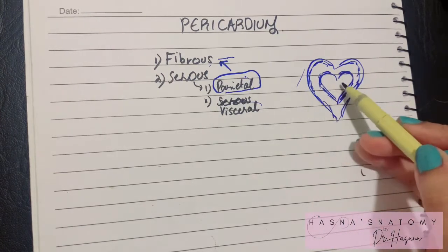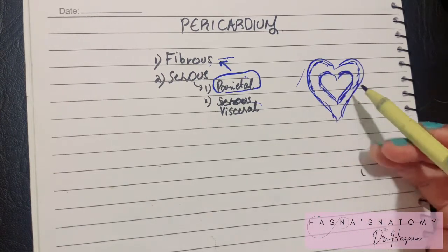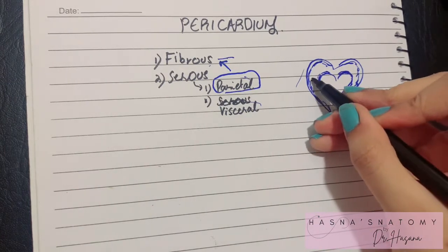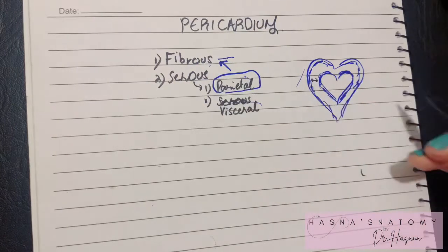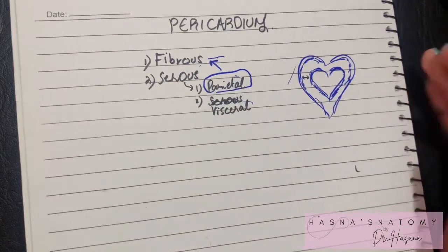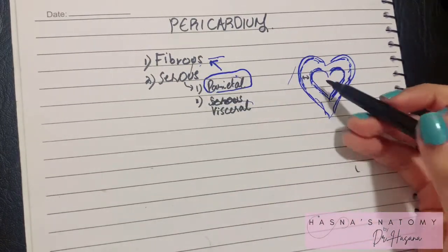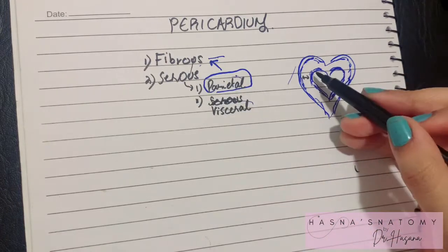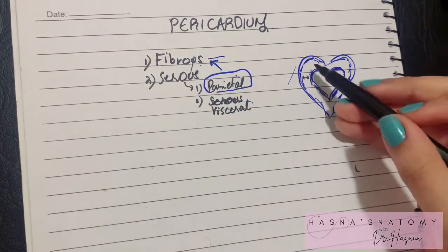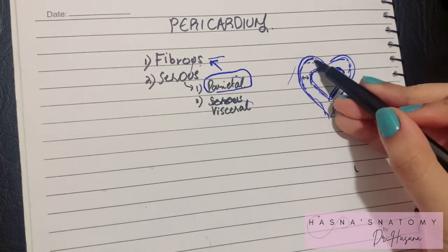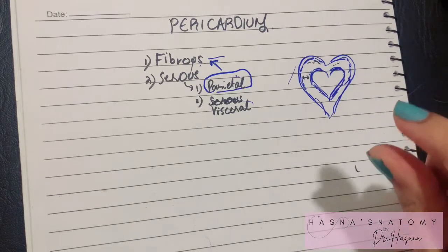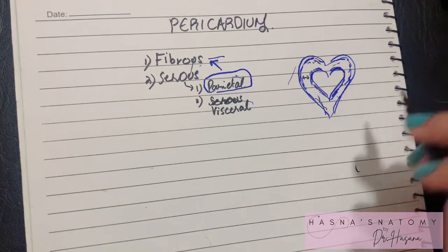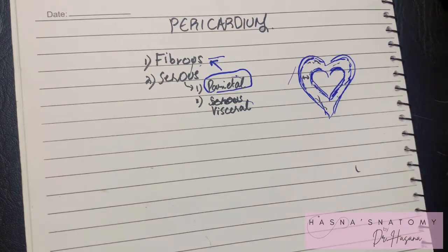The visceral layer is attached to the heart. Just like in the lungs, a cavity is formed between the visceral and parietal layers of the serous pericardium — not between the fibrous and serous layers. This space is the pericardial cavity, and a very thin layer of lubricating fluid is kept here so that the heart can easily contract without friction.